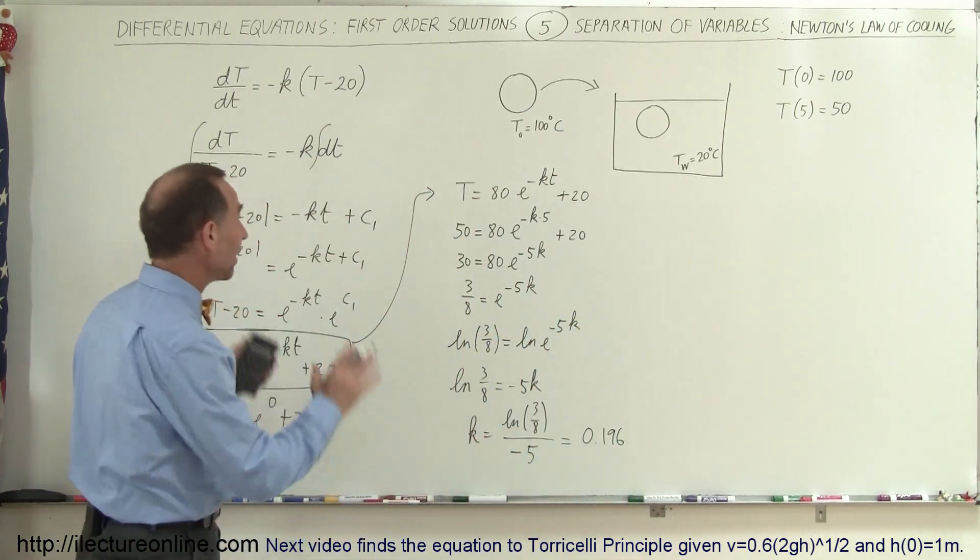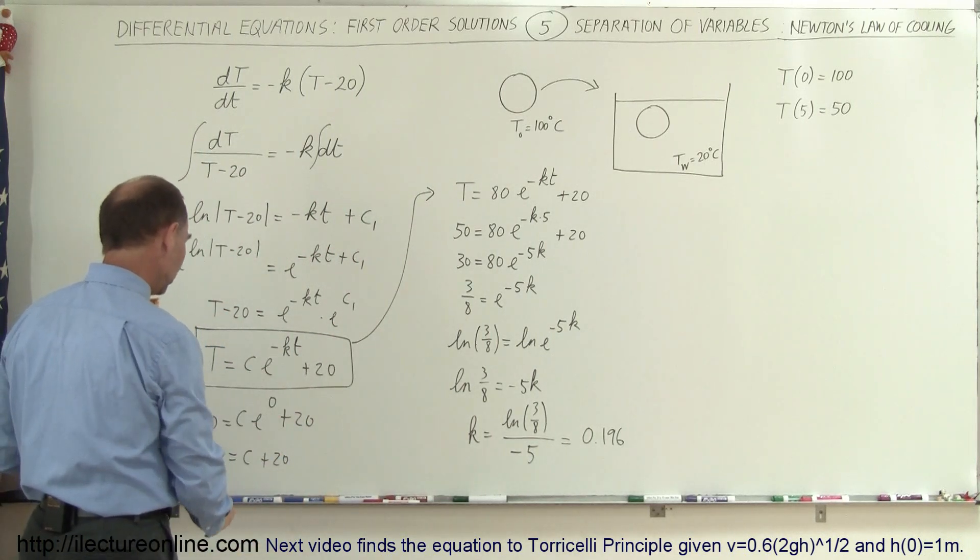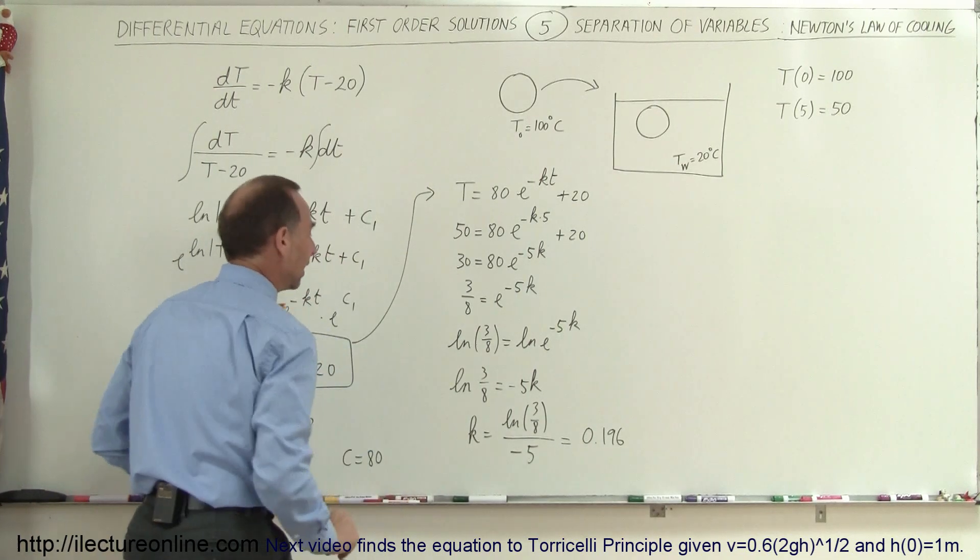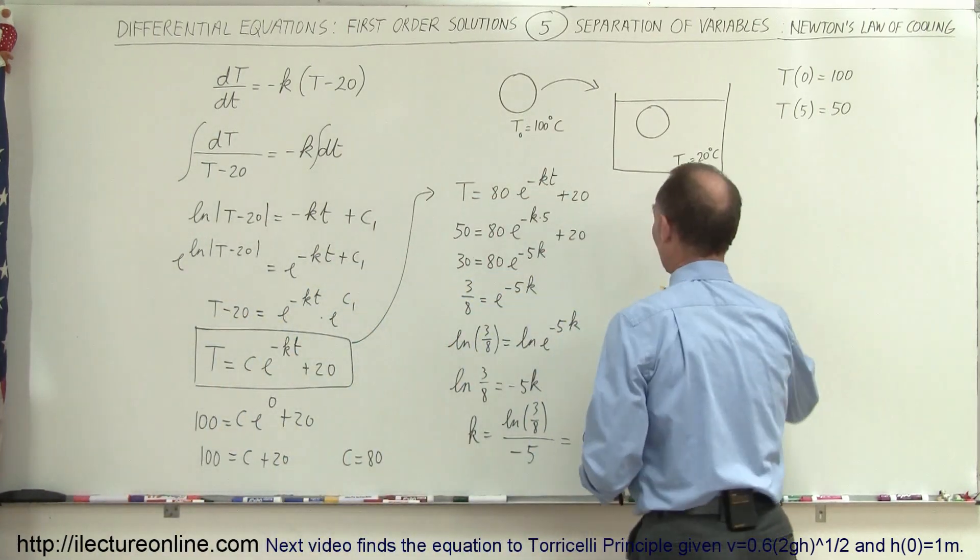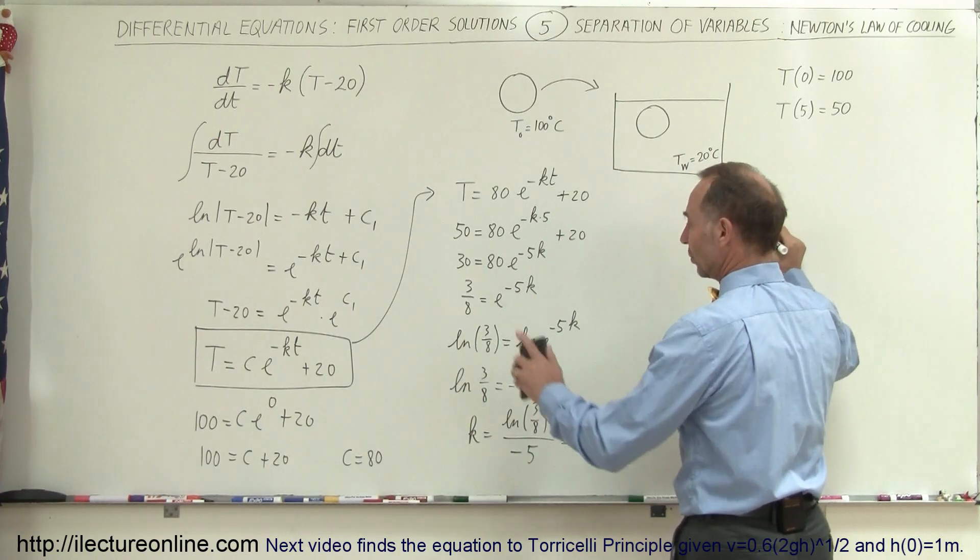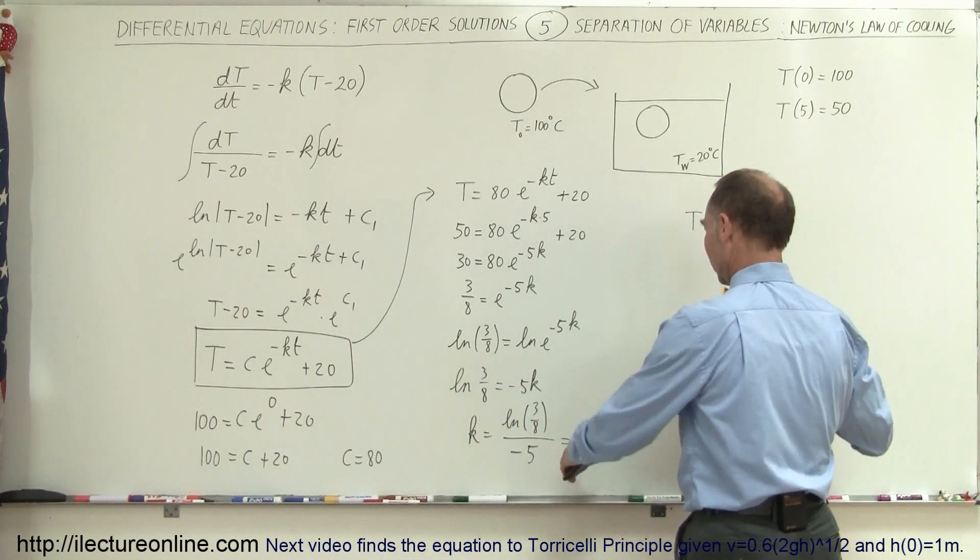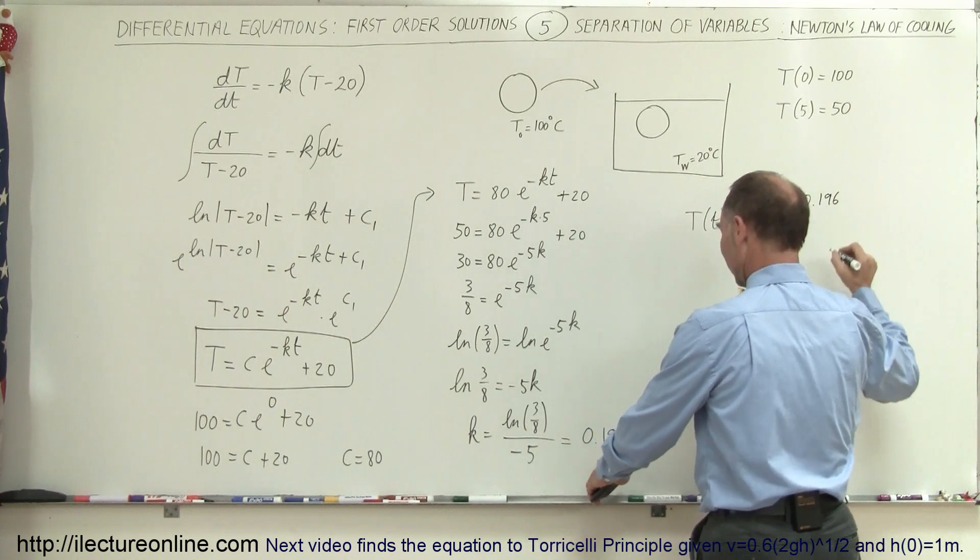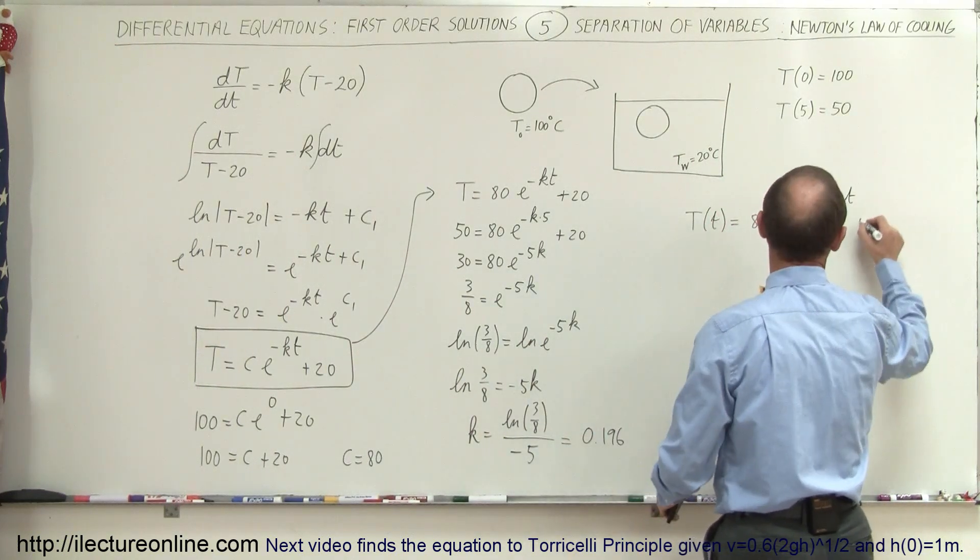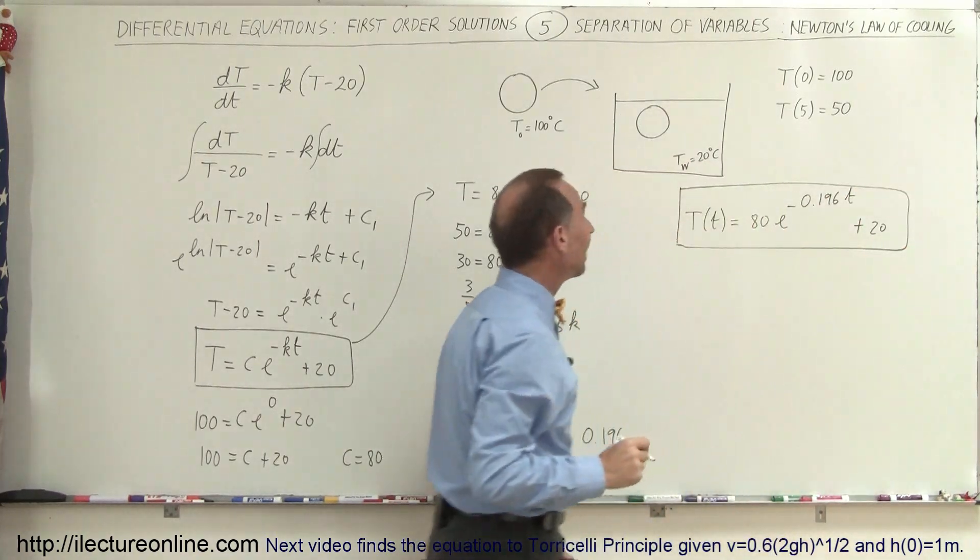Now I can plug that into my equation. C was equal to 80, and K equals 0.196. So my ultimate solution is that the temperature as a function of time equals 80 times E to the minus 0.196 times t, plus 20. And that's how we solve an equation like that.